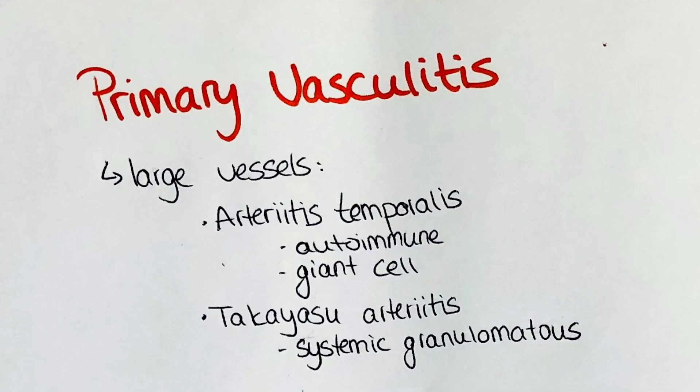Among the vasculitides of the large vessels, we count arteritis temporalis and Takayasu arteritis. Arteritis temporalis is an autoimmune disorder which, as the name suggests, affects usually the arteries. It is associated with polymyalgia rheumatica, as they both belong to the group of giant cell arteritis. Symptoms include pulsating headache, pain in the musculus masseter, and disorders in vision, as the vessels of the eye can also be affected.